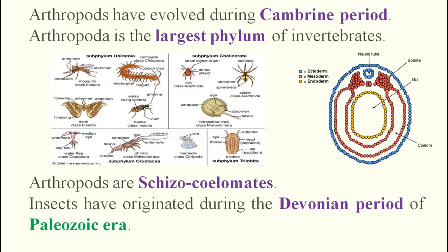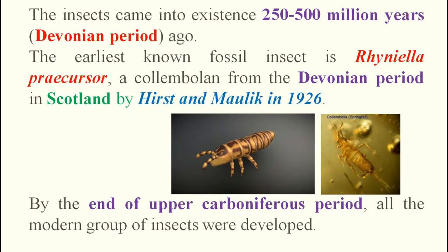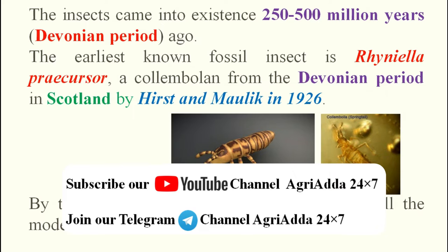Insects have originated during the Devonian period of the Paleozoic era — very important for the exam. Insects came into existence 250 to 500 million years ago; it is also sometimes written as 350 million years, but the range is 250 to 500 million years ago, during the Devonian period.